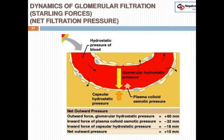This second diagram is the same as the previous one with different colors, but the content is the same. The major outward force — the big arrow — is the glomerular hydrostatic pressure of 60 mmHg. The small pinkish arrow is the plasma oncotic pressure of 32 mmHg trying to retain fluid, and hydrostatic pressure in the capsule is 18 mmHg. Adding 32 plus 18 gives 50, and 60 minus 50 gives 10.